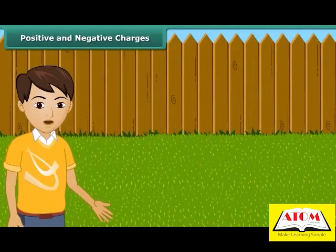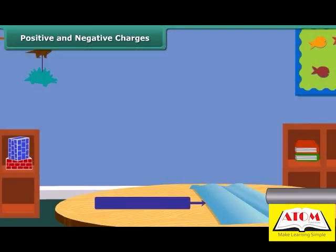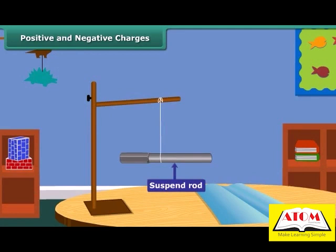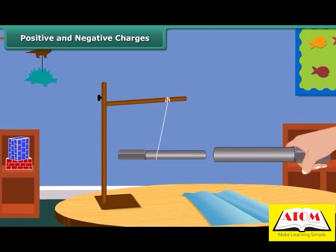Let us perform an activity to understand positive and negative charges. Take an ebonite rod and rub it with a piece of woolen cloth. Now suspend the rod by tying a thread through its middle. Now charge another ebonite rod in the same way and bring it close to the suspended rod. What do you notice? The suspended rod moves away from the second one.